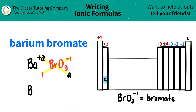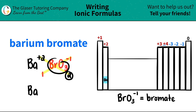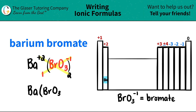So now we're ready to write our formula. I have barium BA, and I only need one of them so I don't write a subscript of one. But since I need multiple polyatomics — in this case two bromates — I need to put them in parentheses. So I put parentheses, write the whole polyatomic BrO3 inside, close the parentheses, and write a subscript of two. Barium bromate is Ba(BrO3)2.